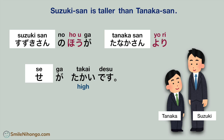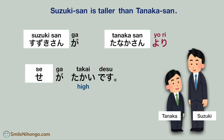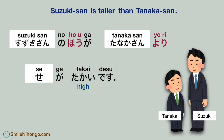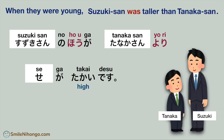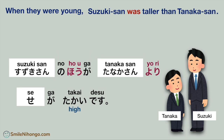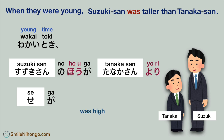And of course, in conversation, you can drop 'no hou' as well. If you want to change it to the past tense — as in, when they were young, Suzuki-san was taller than Tanaka-san — all you have to do is change the end of the sentence. Let's add 'when they were young': in Japanese we say 若い時, 'wakai toki.' Then change the ending to the past tense: 高かったです, 'takakatta desu.' Now the sentence is complete.